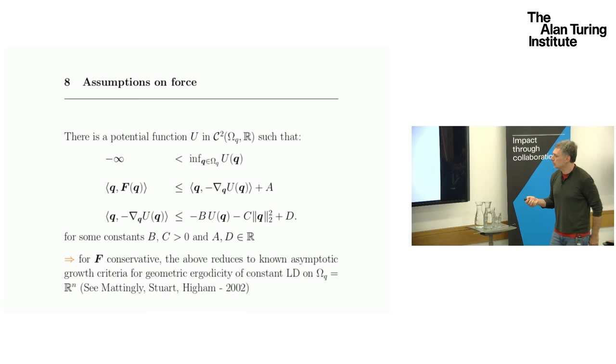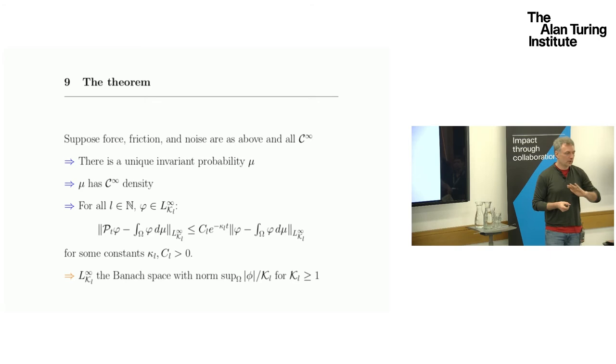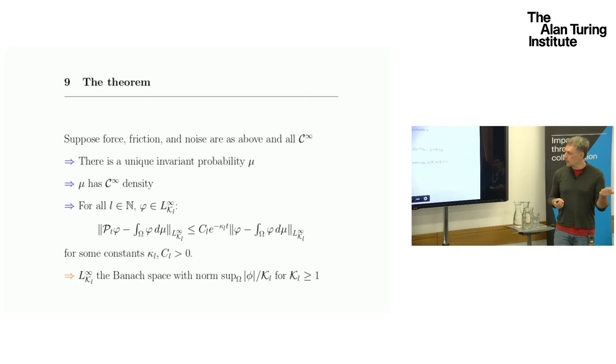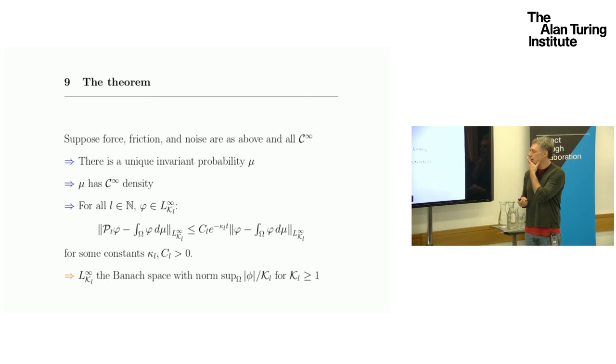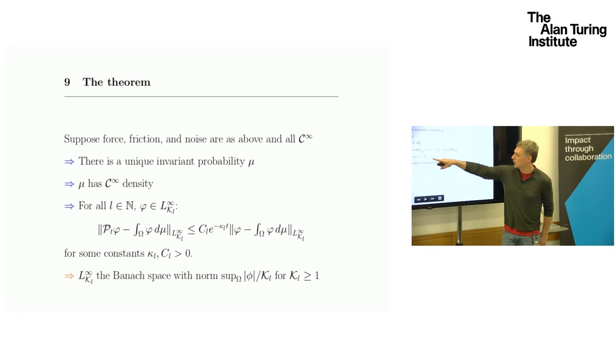Are we done yet with the assumptions? We're going to suppose that everything, all the three terms are smooth over the domain. Here are the conclusions. We do have unique invariant probability. It has a smooth density. Then we have this statement of convergence, which I'm going to read with you.